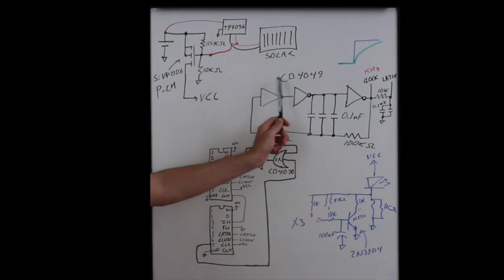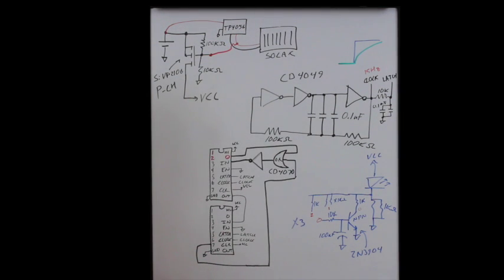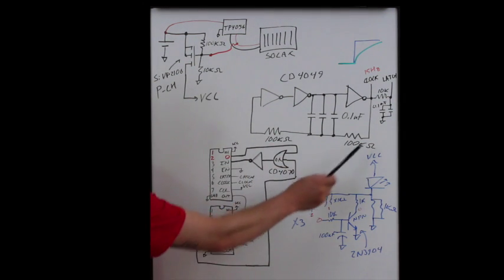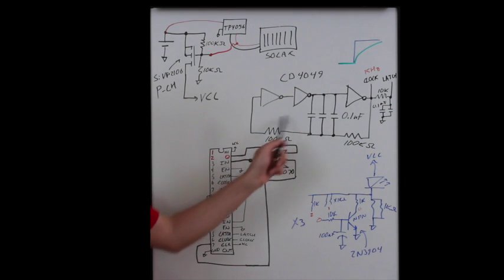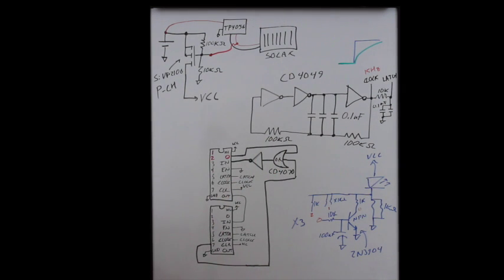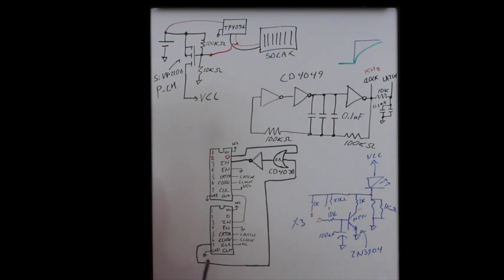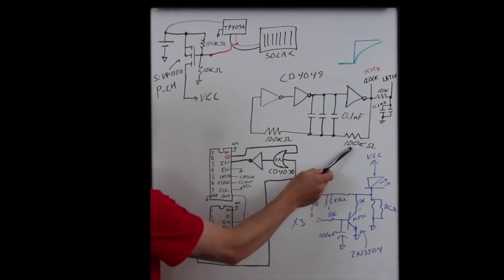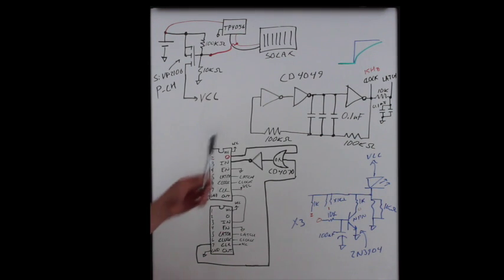So for the clock we've got a CD4049. If you're using like a 74HC or 74HCT, these values will change. And this is a very simple way to generate a clock. You could use a 555 timer. I just didn't have one laying around, so I went with this little RC inverter clock. So we're using three inverters here to generate our clock. We're using a hundred K, a hundred K, and then 3.1 microfarad capacitors to give us about a 15 Hertz clock.